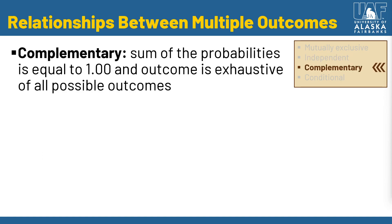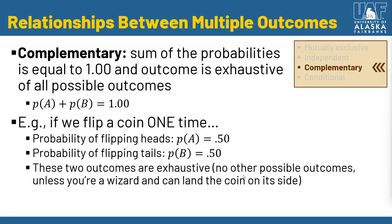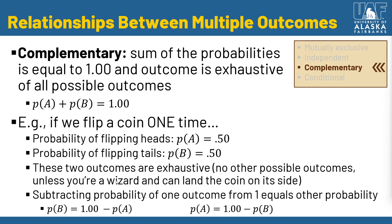Complementary outcomes are when the sum of probabilities equals one and is exhaustive — covering all possible outcomes. P(A) and P(B) add up to one. Flipping a coin one time, those two outcomes are exhaustive — there are no other possible outcomes unless you can land a coin on its side. Using basic algebra, you can subtract the probability of one outcome from one to get the other probability, assuming you're working with two complementary outcomes.